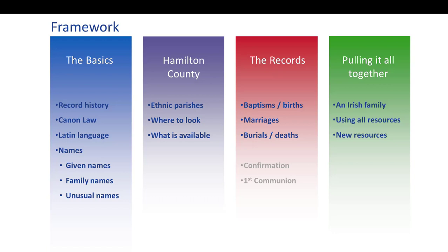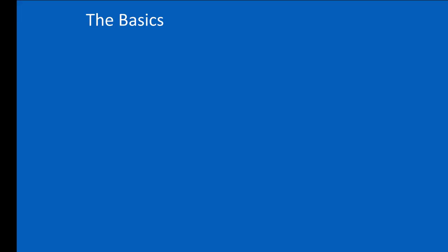We're going to talk about how to find the records, where to look, and what's available. Then we'll spend a lot of time looking at the records themselves — baptisms and births, marriages, burials and deaths. That's what we like because it fits nicely into our pedigree charts. I'm not going to talk about confirmation or first communion records in general — they usually exist but are not very useful. Typically it's just a date with boys on the left and girls on the right. They come into use if you've got a lot of movement and need to confirm a family was still in a parish.